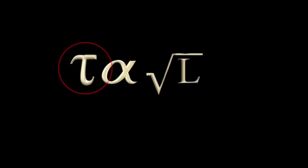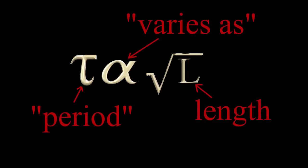The letter T in the formula is actually the Greek letter tau. Tau is used in physics to denote period, an interval of time. In this case, the time for one complete oscillation of a pendulum. This formula states that the period of a pendulum, tau, varies with the square root of the length of the pendulum.